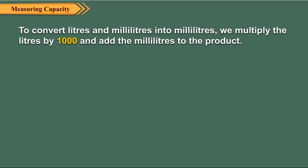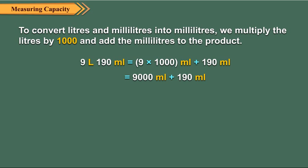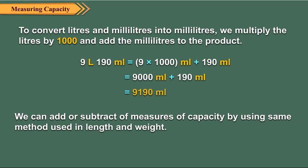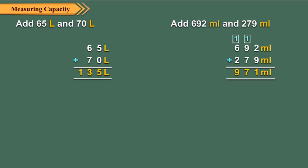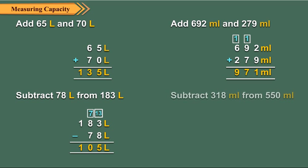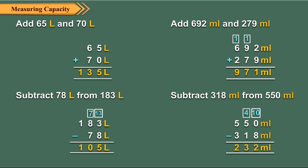To convert liters and milliliters into milliliters, we multiply the liters by 1000 and add the milliliters to the product. Let us now convert 9 liters 190 milliliters into milliliters. We can add or subtract the measures of capacity by using the same methods as used in length and weight. Let us see some examples for this.